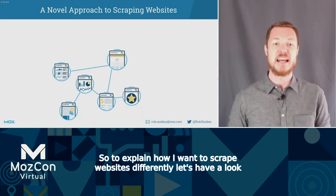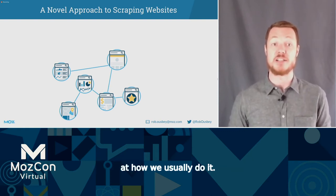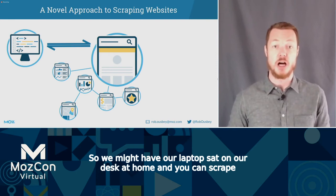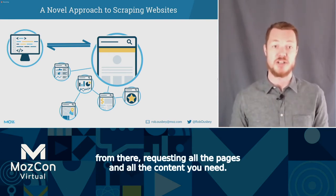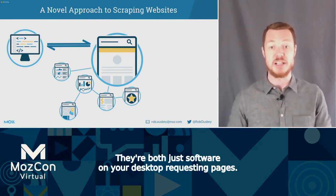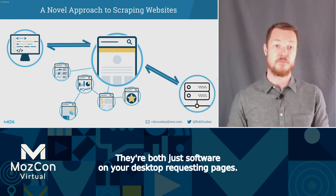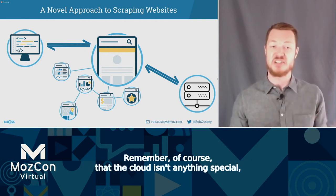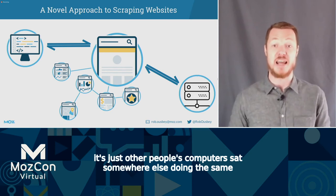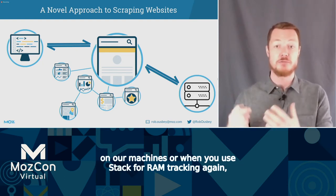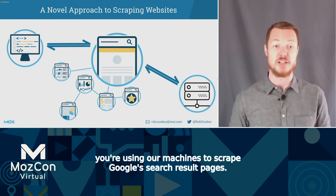To explain how I want to scrape websites differently, let's look at how we usually do it. Imagine an internet full of websites — you might have your laptop at home and scrape from there, requesting all the pages you need. This is how a crawler like Screaming Frog works — you run it from your own machine. Sometimes we crawl not from our desktop but from a server in the cloud — the cloud is just other people's computers. When you use Moz Pro to crawl your site, you're running software on our machines.